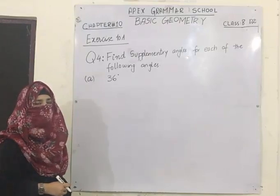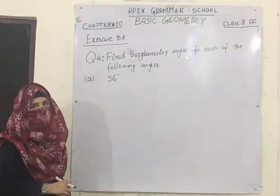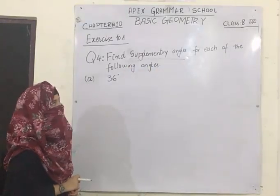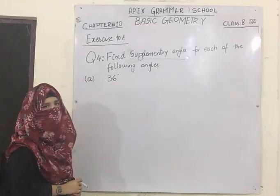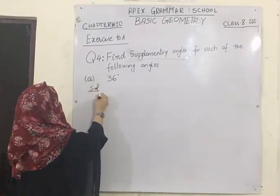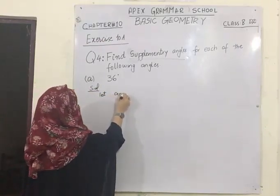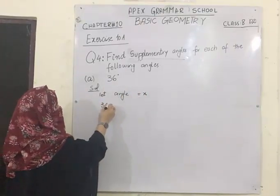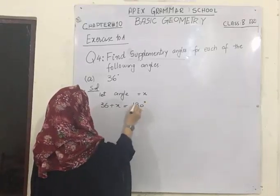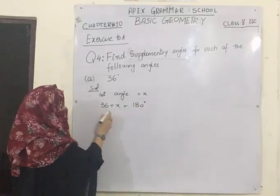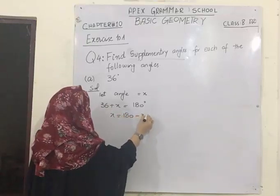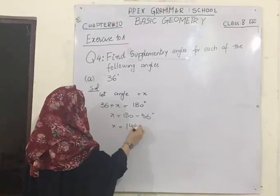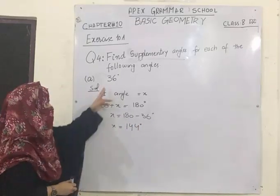Going towards question number 4, in which you are asked to find the supplementary angles for each of the following angles. Remember that supplementary angles add up to make 180 degrees. You are given one angle and you have to find the other. Let that angle be x. If both angles are supplementary, they add up to 180 degrees. Since 36 is added on one side, it will be subtracted on the other, giving you 144 degrees, which is the supplementary angle of 36 degrees.